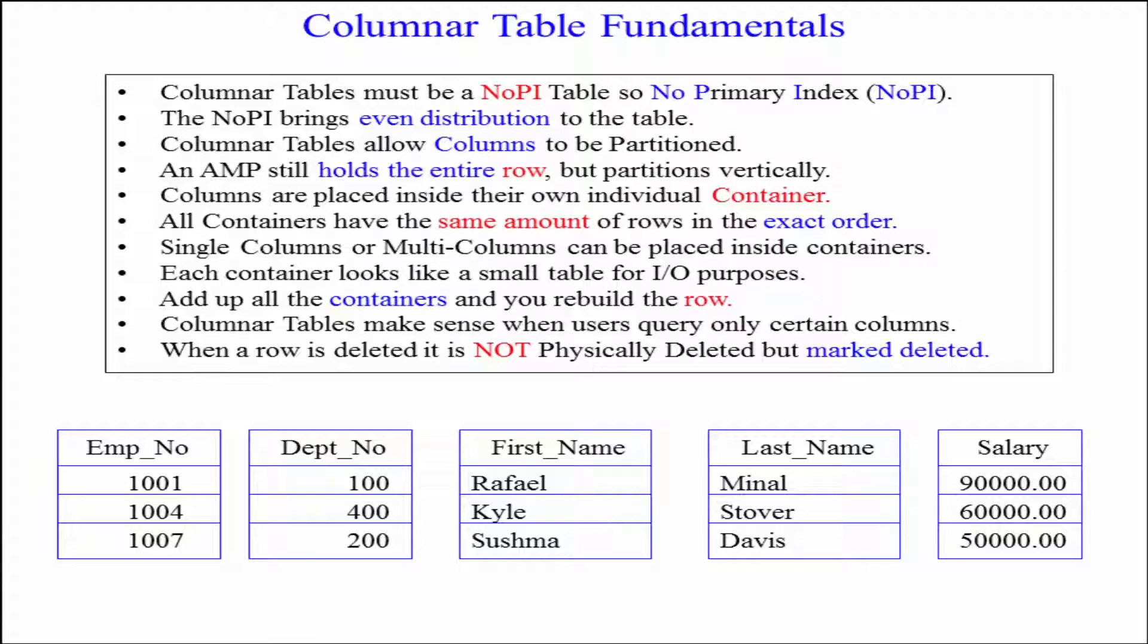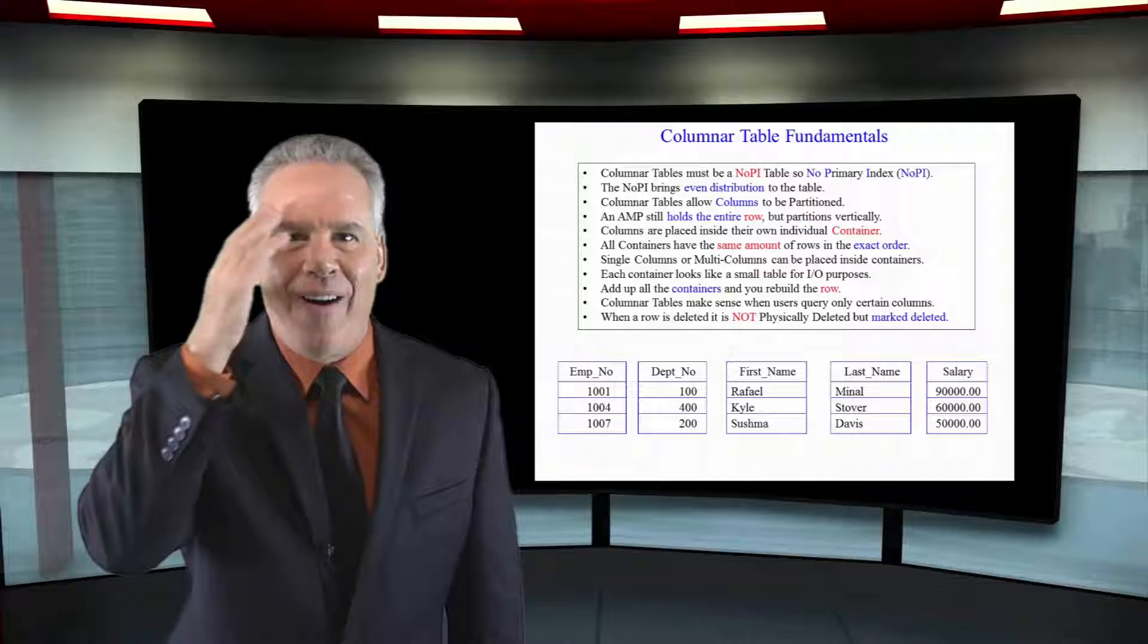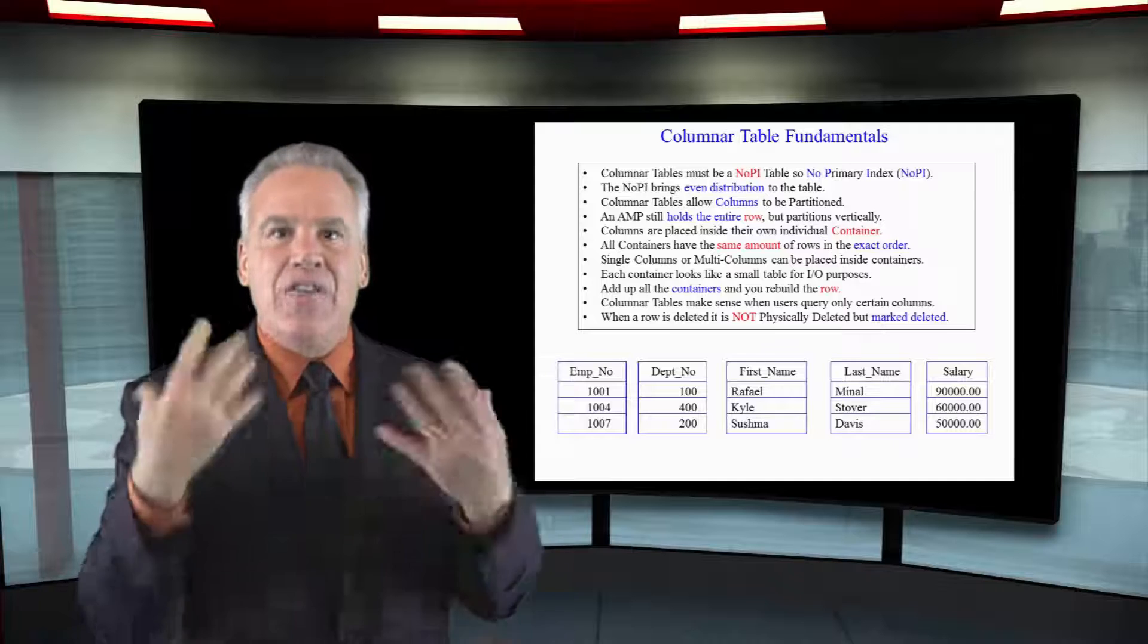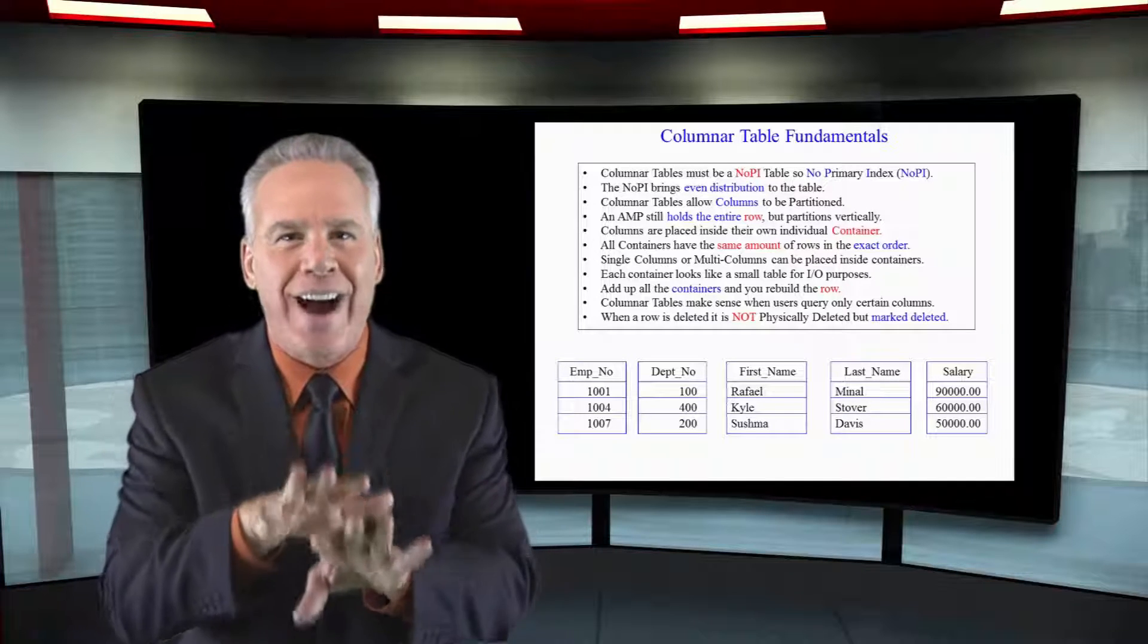But when you say, I want to know the average salary, one container goes in, and that's when they go, oh, it's brilliant. We had hardly any data movement. That's what you want in a columnar table.